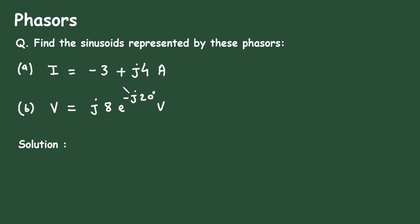In this video we will see an example on phasors. The question is: find the sinusoids represented by these phasors. The first question is i equals minus 3 plus j4 ampere. This phasor is given in rectangular form.